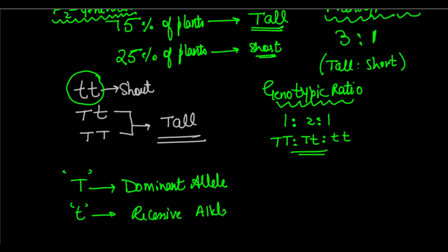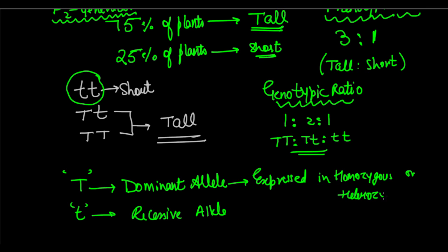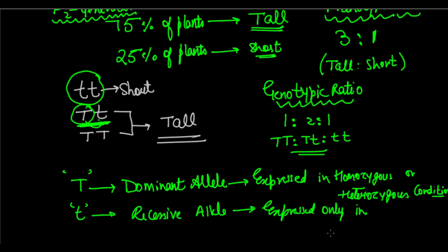The dominant allele expresses itself in both homozygous condition — where both alleles are the same — and heterozygous condition — where the two alleles are different. In a heterozygous capital T small t genotype, capital T still suppresses small t and expresses a tall phenotype. The recessive allele is expressed only in a homozygous condition; in a heterozygous condition it gets suppressed. For example, small t small t is the homozygous recessive condition that gives a short plant.